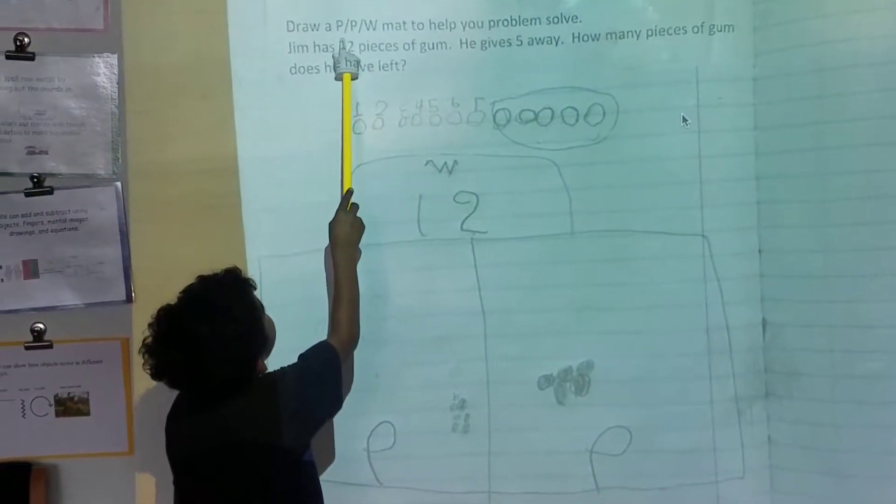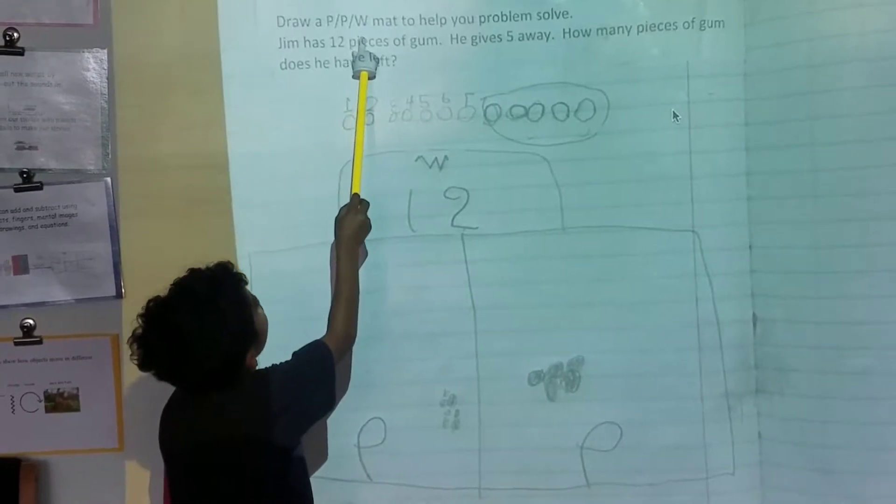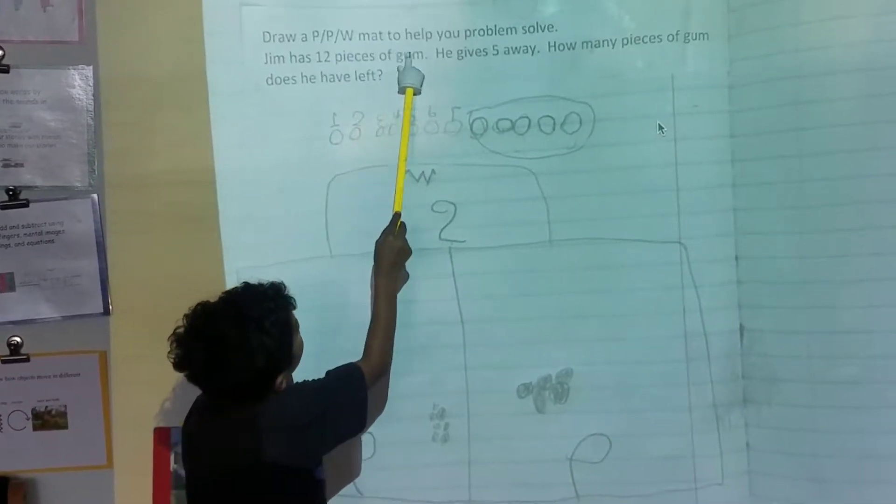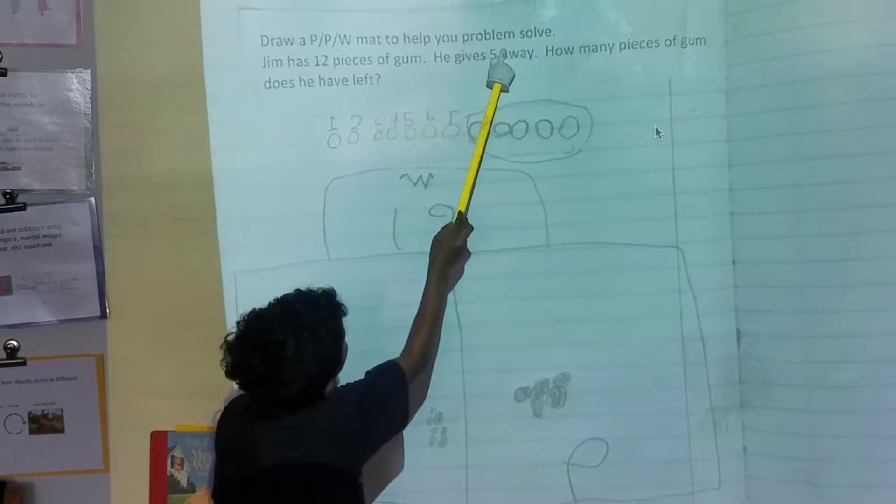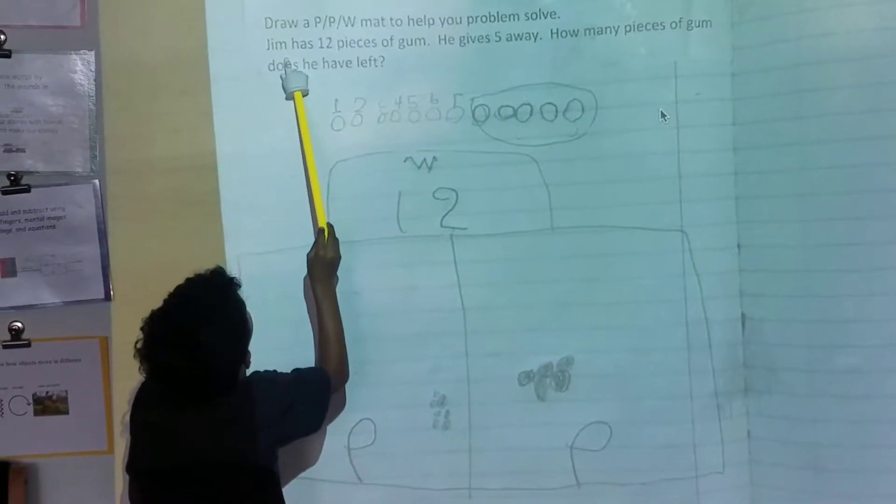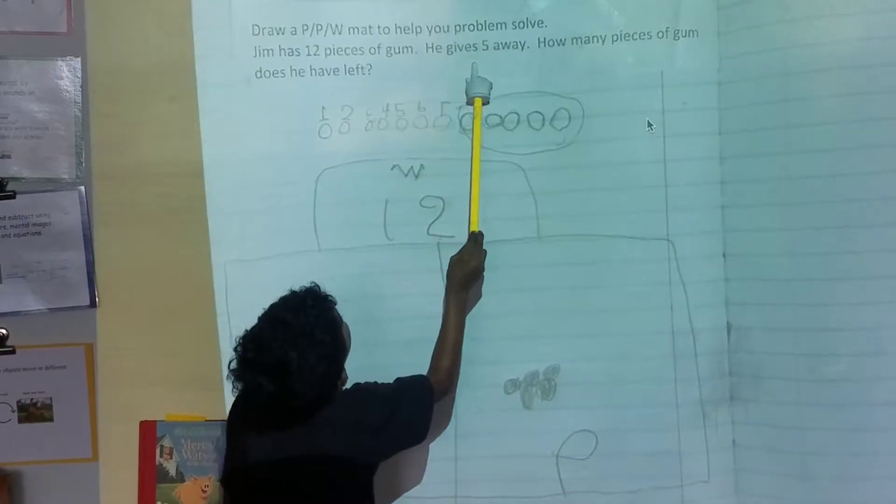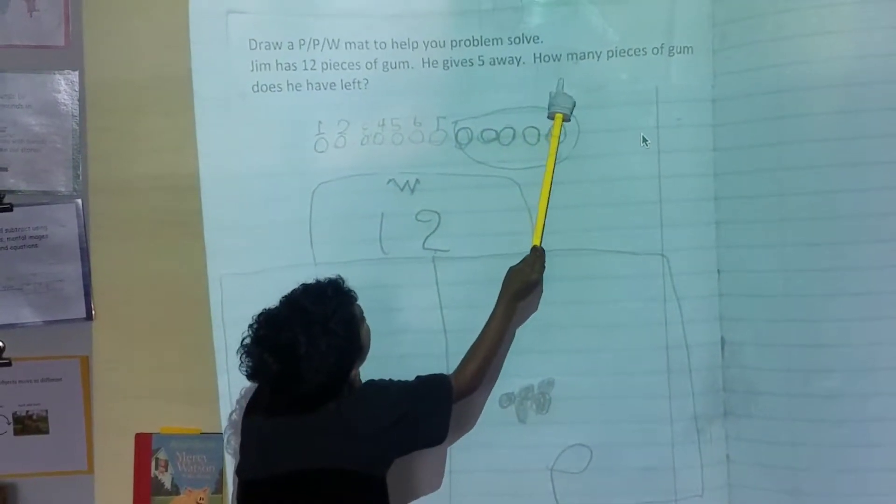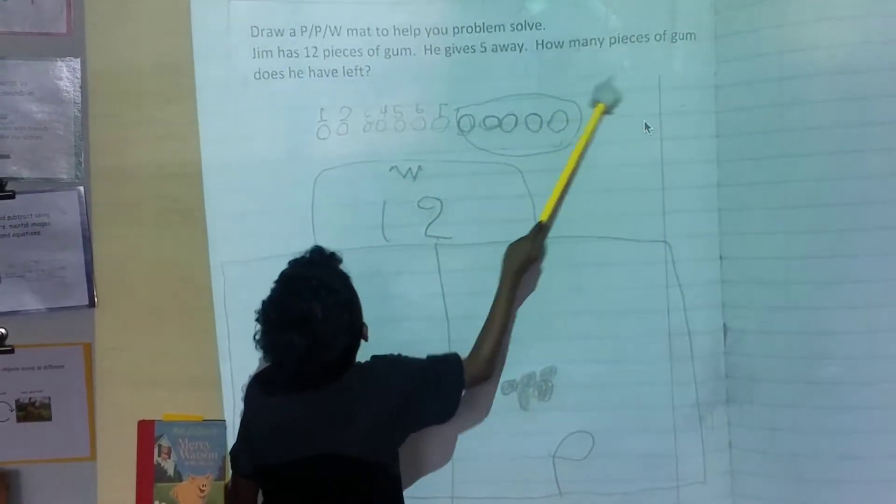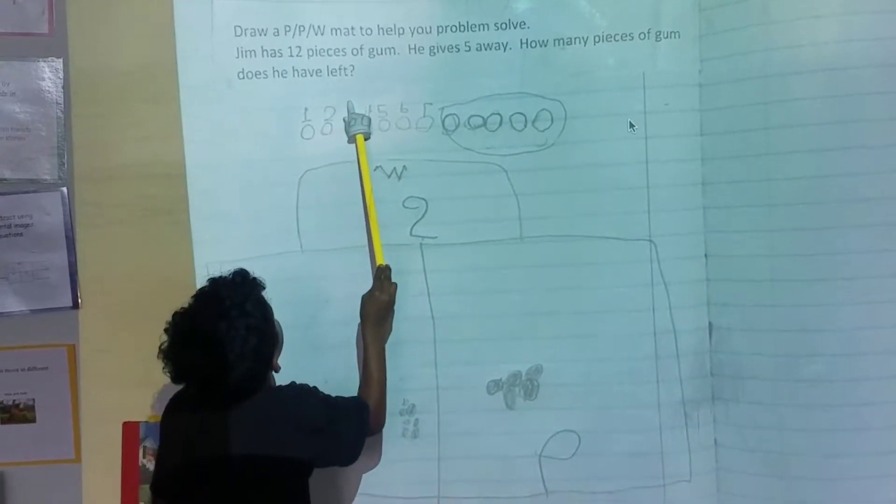Draw a part-part-whole mat to help you problem solve. Jim has 12 pieces of gum. He gives 5 away. How many pieces of gum does he have left?